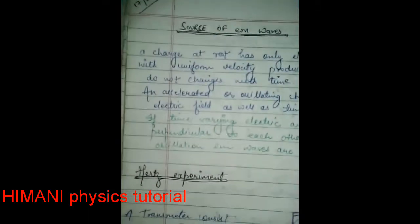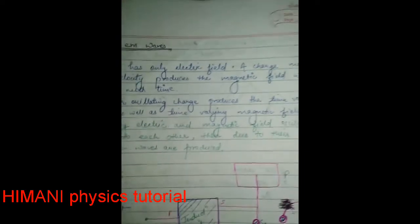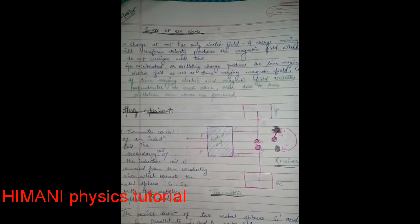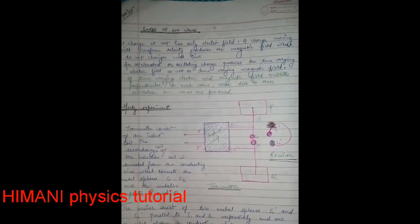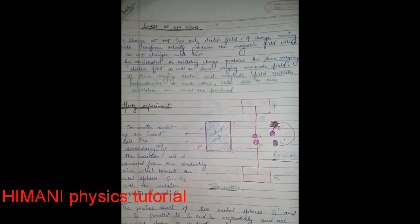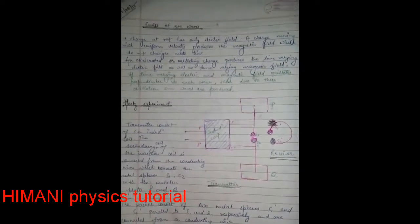So we can write: a charge at rest has only electric field. A charge moving with uniform velocity produces the magnetic field which does not change with time. An accelerated or oscillating charge produces the time-varying electric field as well as the time-varying magnetic field. If time-varying electric and magnetic fields oscillate perpendicular to each other, then due to their oscillation, EM waves are produced.